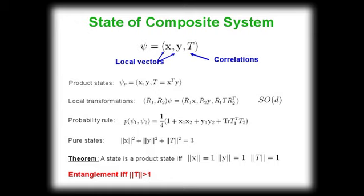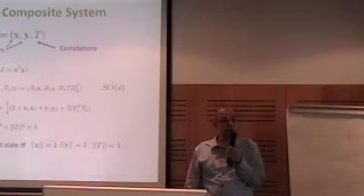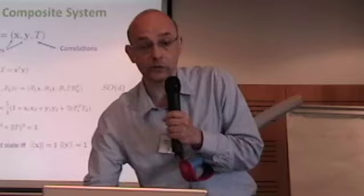Then you can derive from this a very simple theorem, that the state is a product state if and only if the length of the measure of the correlation tensor is one. And if you're above that, you know you have entanglement in the theory.